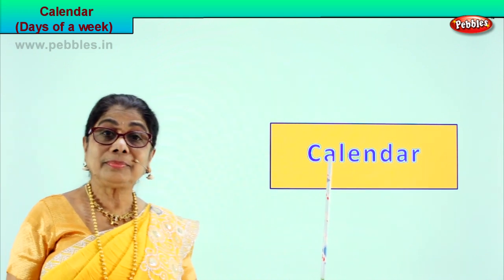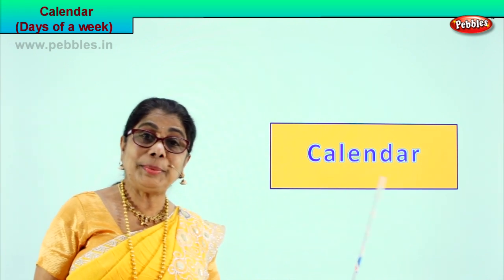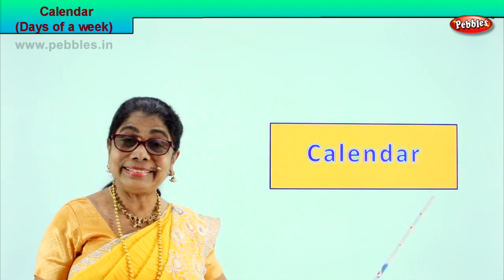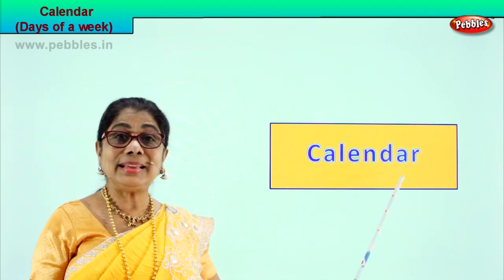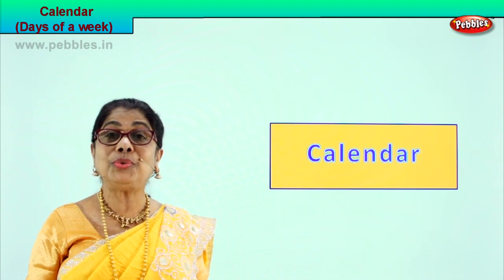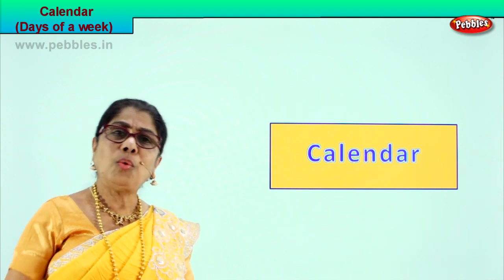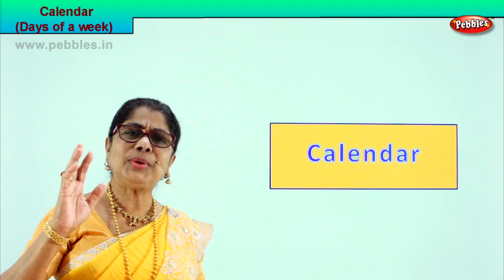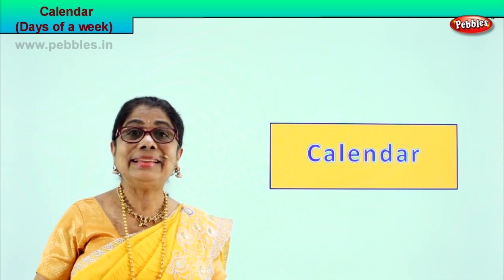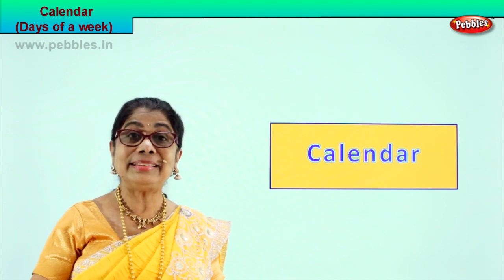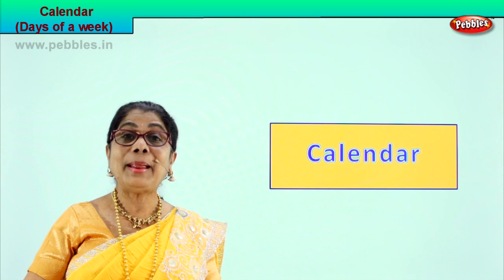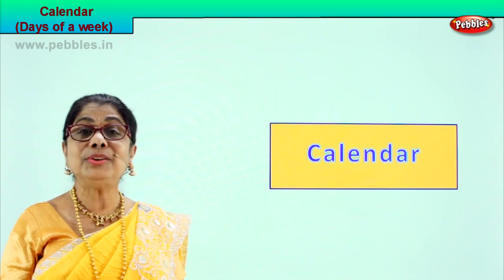Hi children, read this with me. What is it? Calendar. You have calendars on the wall of your house? Yes, beautiful, colourful calendars. What are the things you can see in the calendar? Numbers. Then days of the week. Then months of the year. Good.